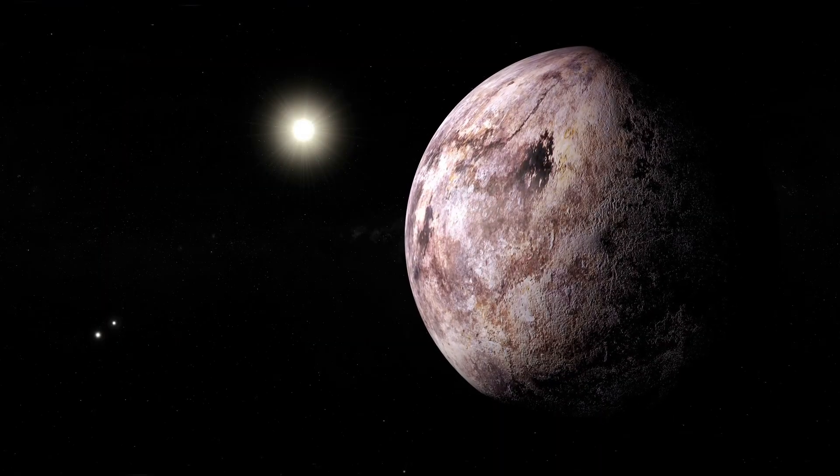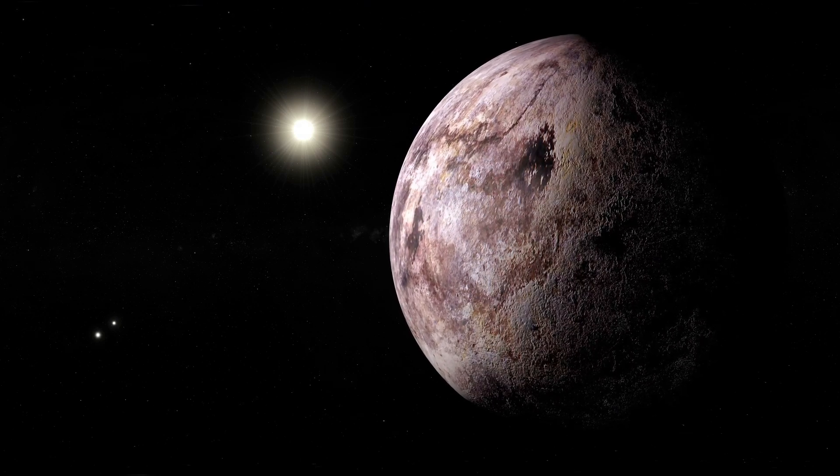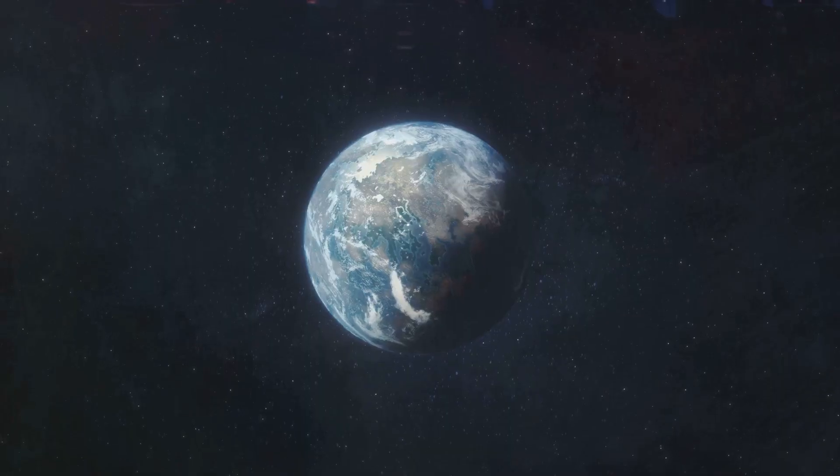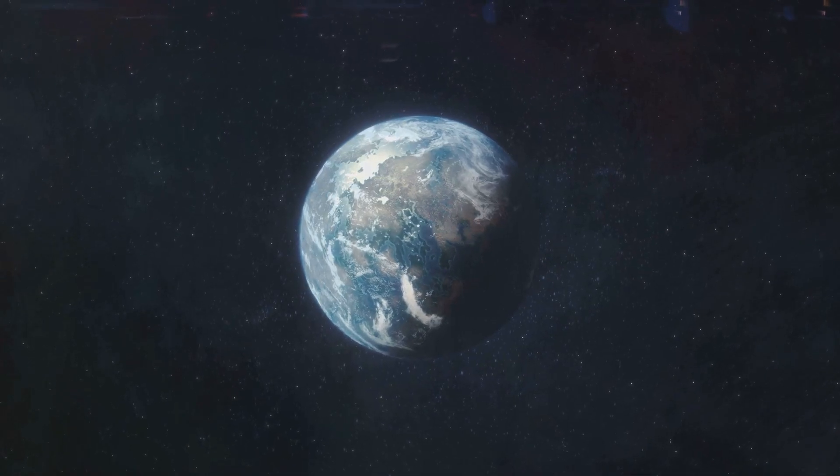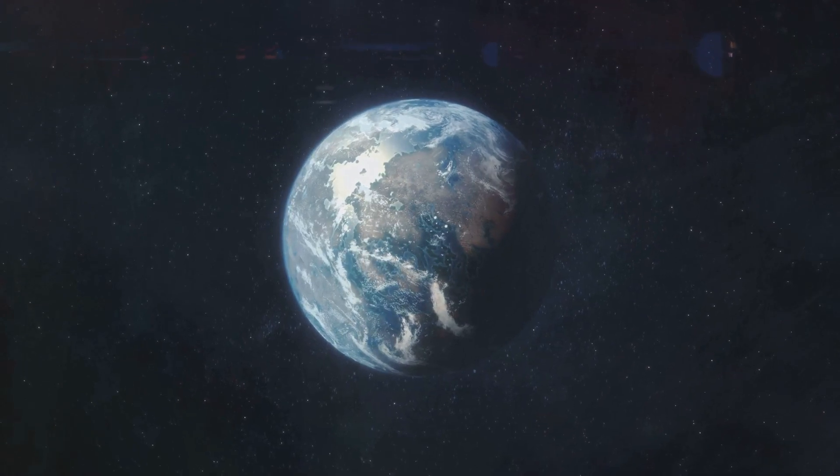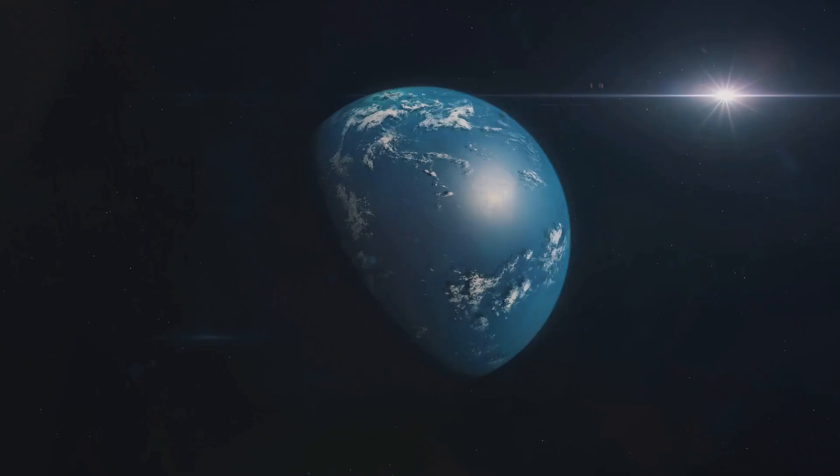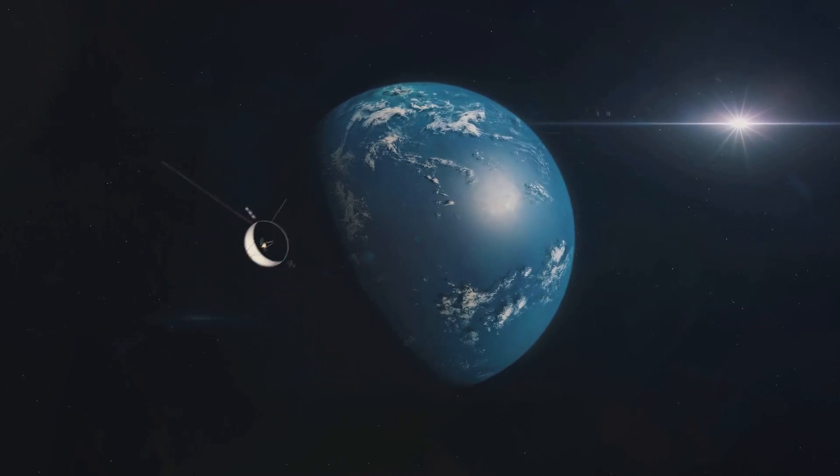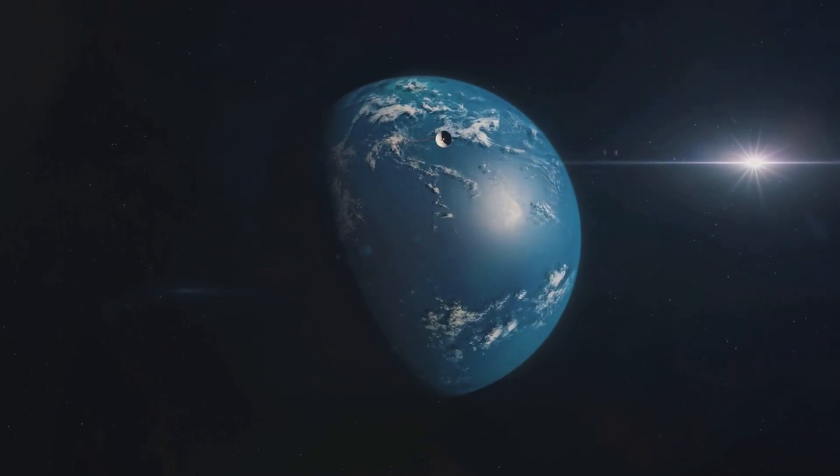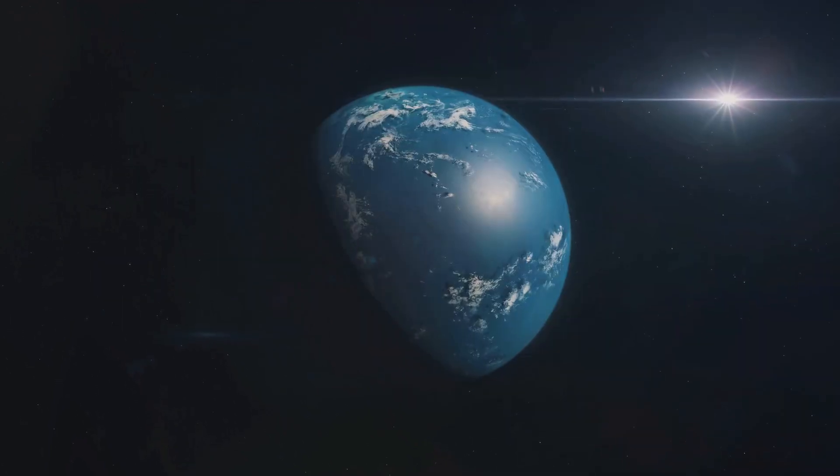Let's first venture towards Proxima B, the innermost of the two. This planet is roughly 1.27 times the size of our Earth, a similarity that sparked immediate interest. It orbits its star at a distance of about 7 million kilometers. That's roughly only 5% of the distance between the Earth and our sun. Despite this close proximity to its star, Proxima B's orbit lies within the habitable zone, or the Goldilocks zone, where conditions could be just right for liquid water to exist on the surface.